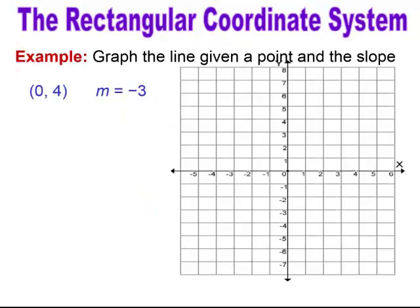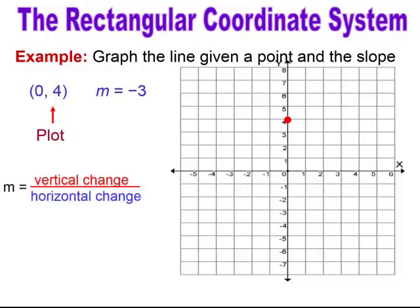When we want to graph a line given a point and a slope, we're going to do the reverse. Take the point — in this case (0, 4) — and plot it. Now I have the point plotted and I need a second point to graph the line, so I'll use the slope to find that second point. Remember, slope is vertical change over horizontal change. When you have an integer, like negative 3, you can create a fraction by putting it over 1 to get your horizontal change.